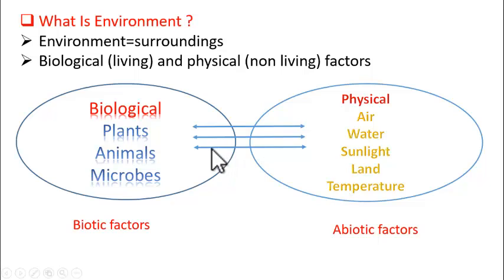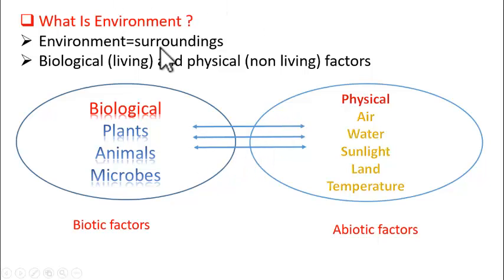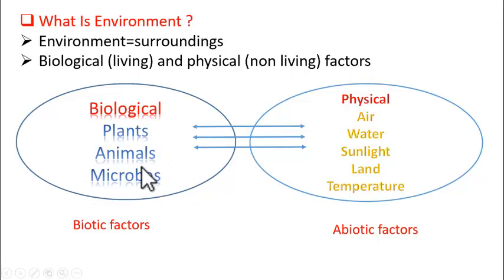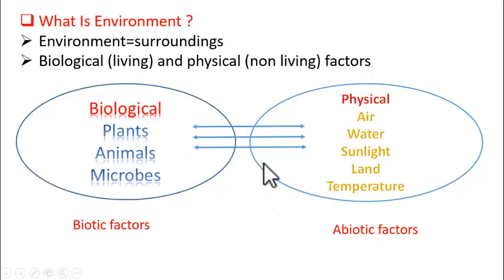Do you think these factors are independent? No, actually they are dependent. There is always constant interaction going on between these factors which makes the environment stable. If you take plants, what do they do? Plants take air, water and sunlight and they make food. That food is transferred to animals. When both plants and animals die, the microbes break these dead bodies and release the nutrients again back into the environment. So, this way the materials are exchanged between biological factors and physical factors continuously like a cycle, and these cycles make the environment stable.